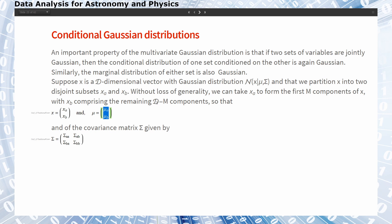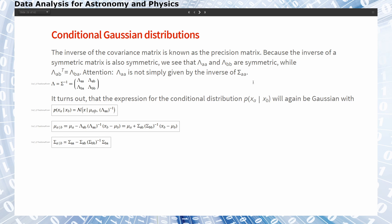We can write the covariance matrix sigma in terms of partitioned sub-matrices: sigma_aa, sigma_bb, sigma_ab, and sigma_ba. The inverse of the covariance matrix — another name is the precision matrix — is also symmetric, and since the inverse of a symmetric matrix is symmetric, we can write the precision matrix lambda in a corresponding partitioned form. The diagonal blocks lambda_aa and lambda_bb are symmetric, while for the off-diagonal elements, lambda_ab is the transpose of lambda_ba.